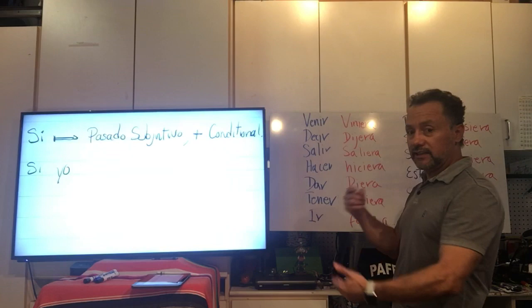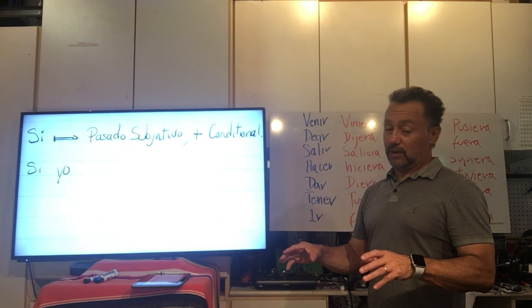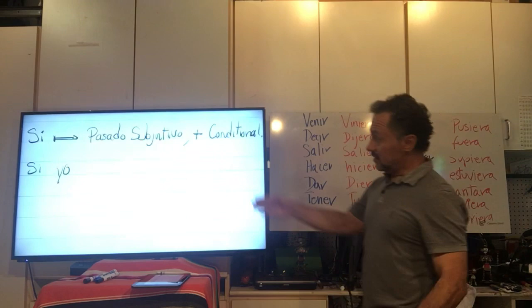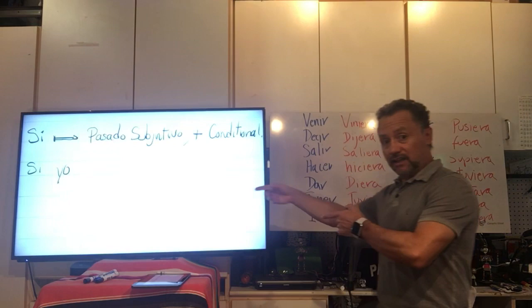Si yo te diera un millón de dólares. Wow, yo no soy rico, verdad? Pero si yo te diera un millón de dólares. Si yo tuviera un millón de dólares. Wow, watch that. Si yo tuviera un millón de dólares. Yo te daría un poquito de dinero, verdad? And that is the second half of the conditional.